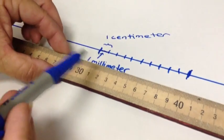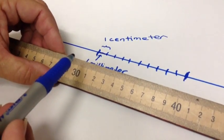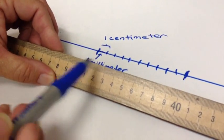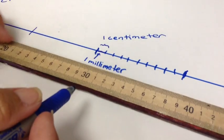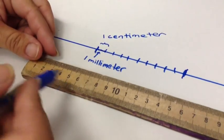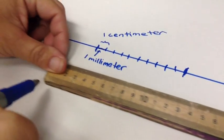So all those little tiny lines right there. So if I were to draw a line, let's say I'm going to draw a line starting at the end here.